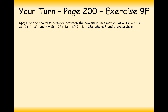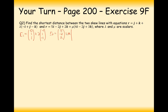Here is a practice question — it's the standard shortest distance between two skewed lines question. Pause the video and try this one. Let's write the two equations in vector form. The first line is r₁ = (0, 1, 1) + λ(-1, 1, -1), and the second is r₂ = (5, -2, 2) + μ(4, -2, 3).